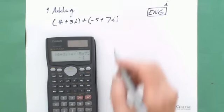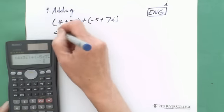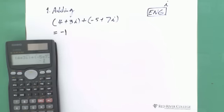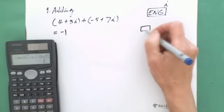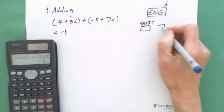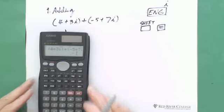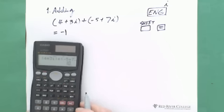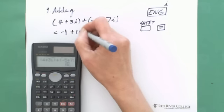And equal gives you the answer -1. That's the real number portion. For the complex number portion, you just do shift and this one. Shift, equal sign, shows you 10i. So there's no negative sign, which means plus 10i.